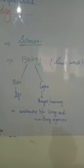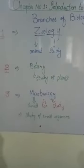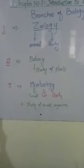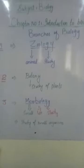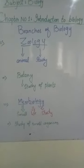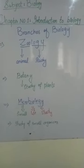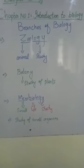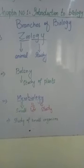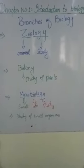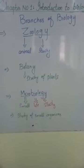Now we come to our next topic: branches of biology. Our first branch is zoology. The word 'zoo' means animal and 'logos' means study. So zoology is the branch of biology in which we study about animals — their structures and body structure.